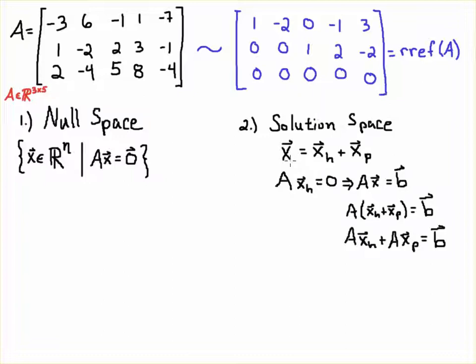Let's see how this relates to the solution space. Any solution to the system Ax = B can be decomposed into its homogeneous and particular solution. The homogeneous solution x_h gives you zero on the right-hand side — these are the vectors that give you zero, which is closely related to the null space.